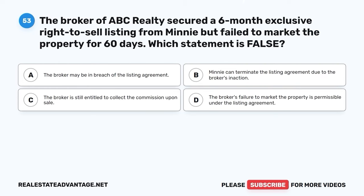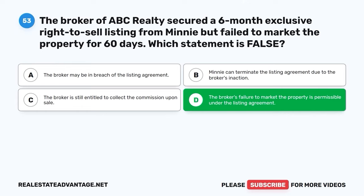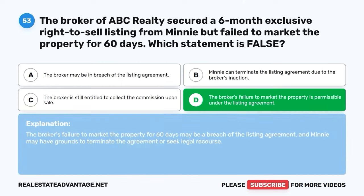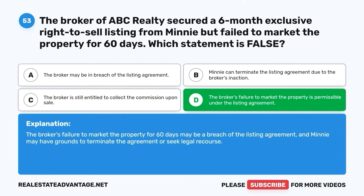Question 53. The broker of ABC Realty secured a six-month exclusive right-to-sell listing from Minnie but failed to market the property for 60 days. Which statement is false? A. The broker may be in breach of the listing agreement. B. Minnie can terminate the listing agreement due to the broker's inaction. C. The broker is still entitled to collect the commission upon sale. D. The broker's failure to market the property is permissible under the listing agreement. The correct answer is D. The broker's failure to market the property for 60 days may be a breach of the listing agreement, and Minnie may have grounds to terminate the agreement or seek legal recourse.